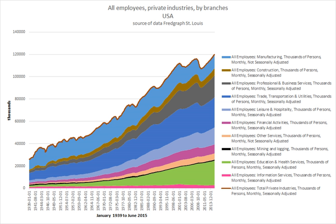Canada. In the Canadian province of Ontario, formal complaints can be brought to the Ministry of Labour. In the province of Quebec, grievances can be filed with the Commission des Normes du Travail.